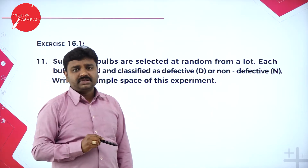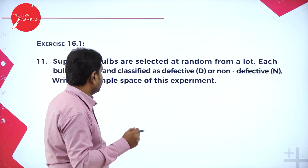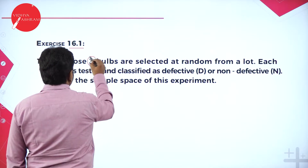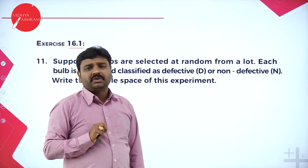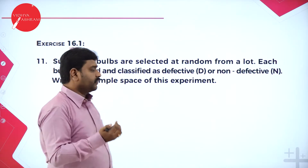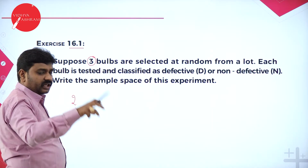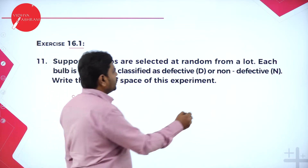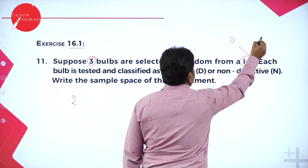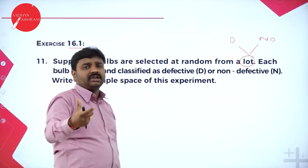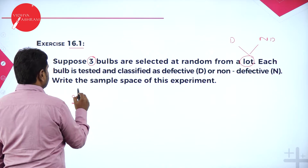There are two types of bulbs — defective or non-defective — and you are supposed to select three bulbs. So any three bulbs have only two possibilities: either defective or non-defective. So two possible outcomes per selection, and you have three chances, giving us 2³ = 8 possible outputs.